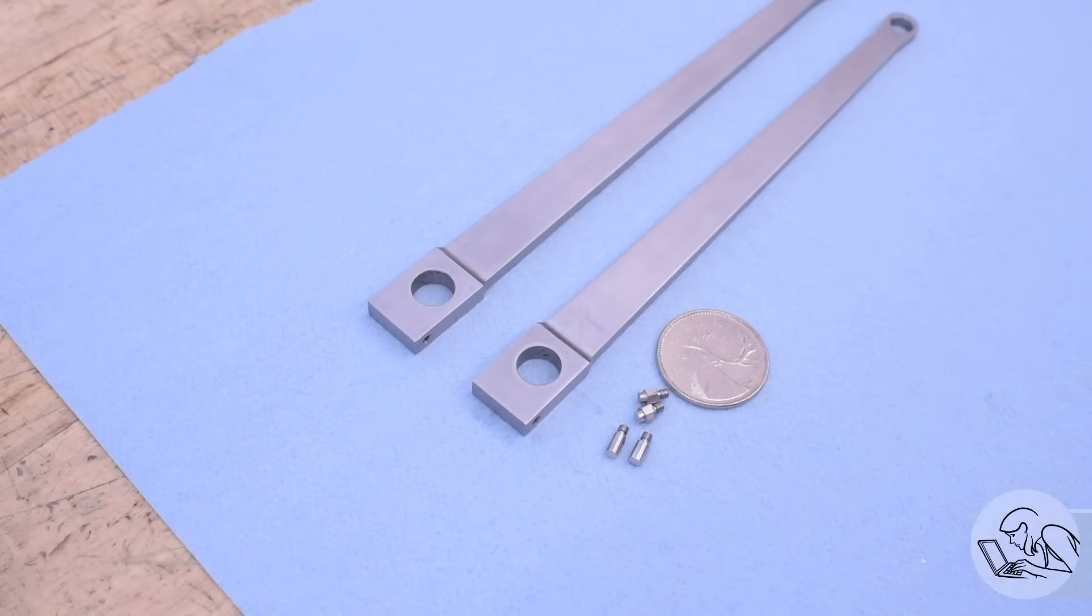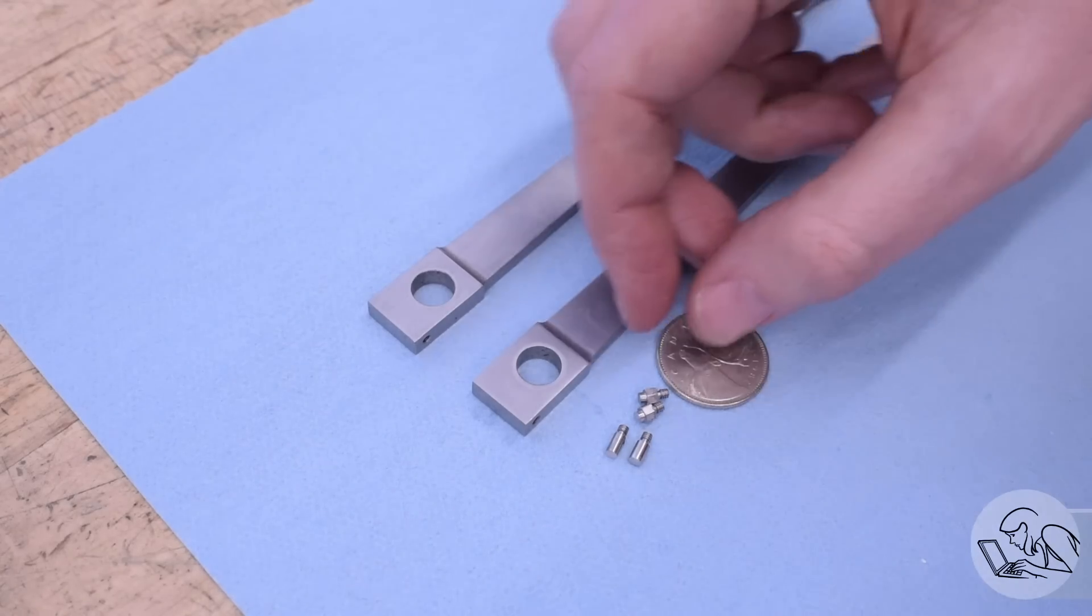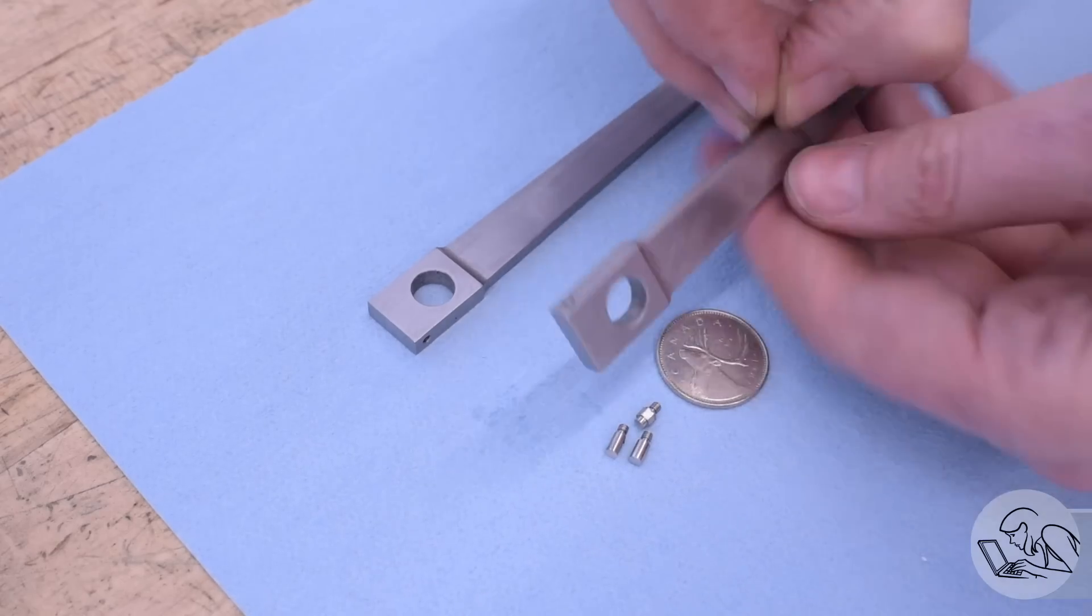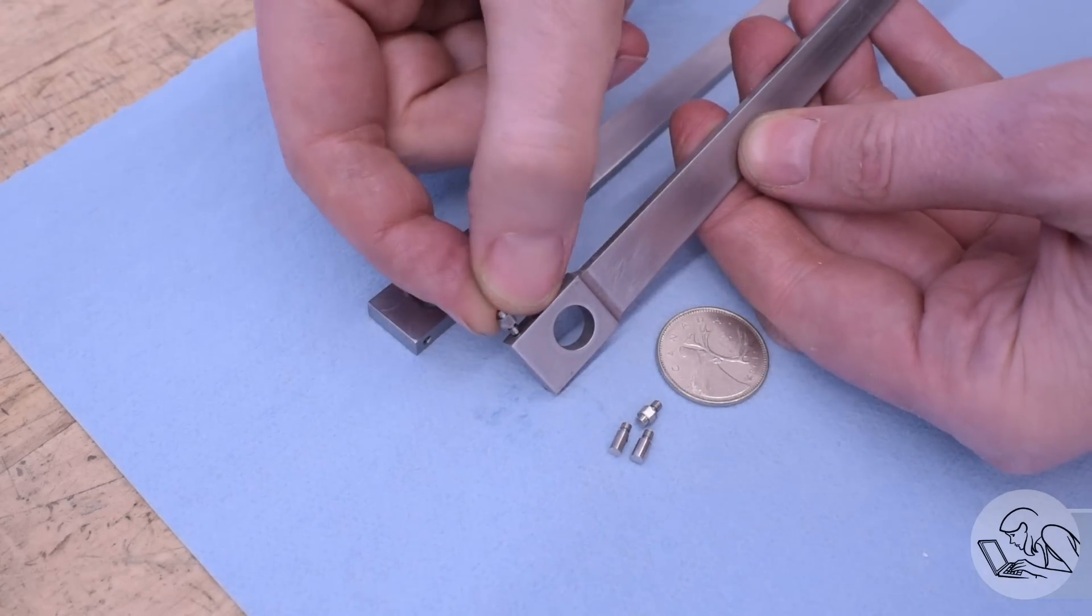How small are they? Well, here is a Canadian quarter for scale. Oh, sorry, I guess for the American viewers, a Canadian quarter is 89% the size of a Sacagawea dollar coin. Happy to have cleared that up for you.